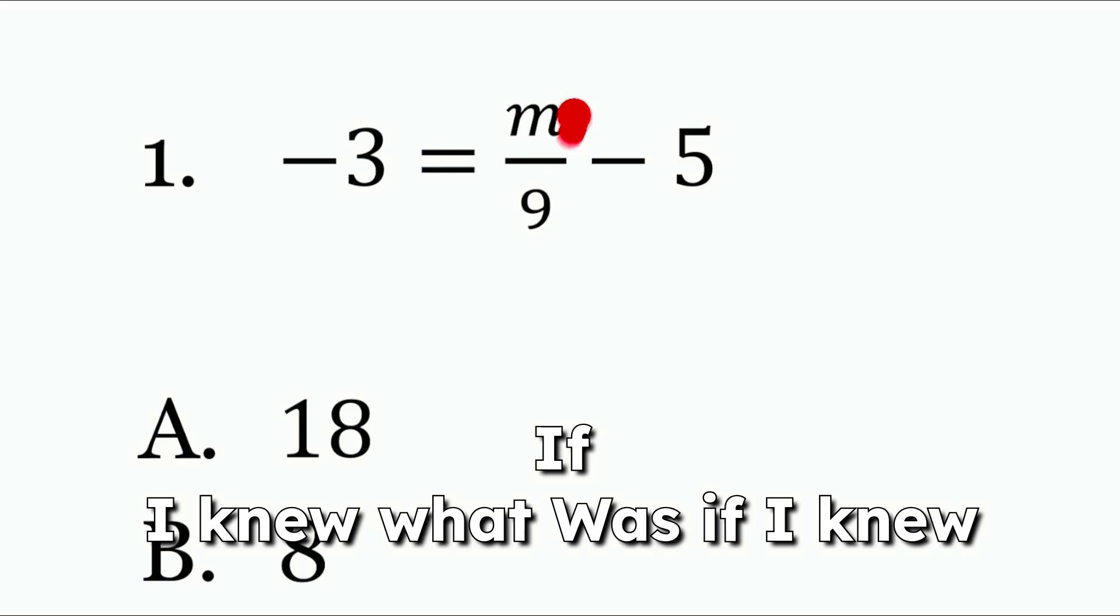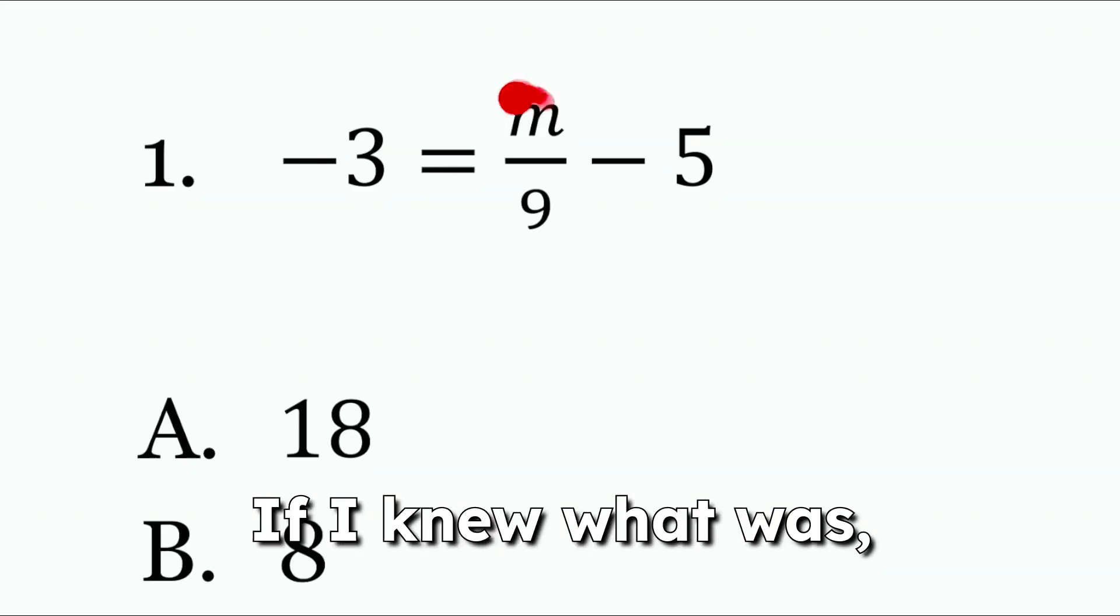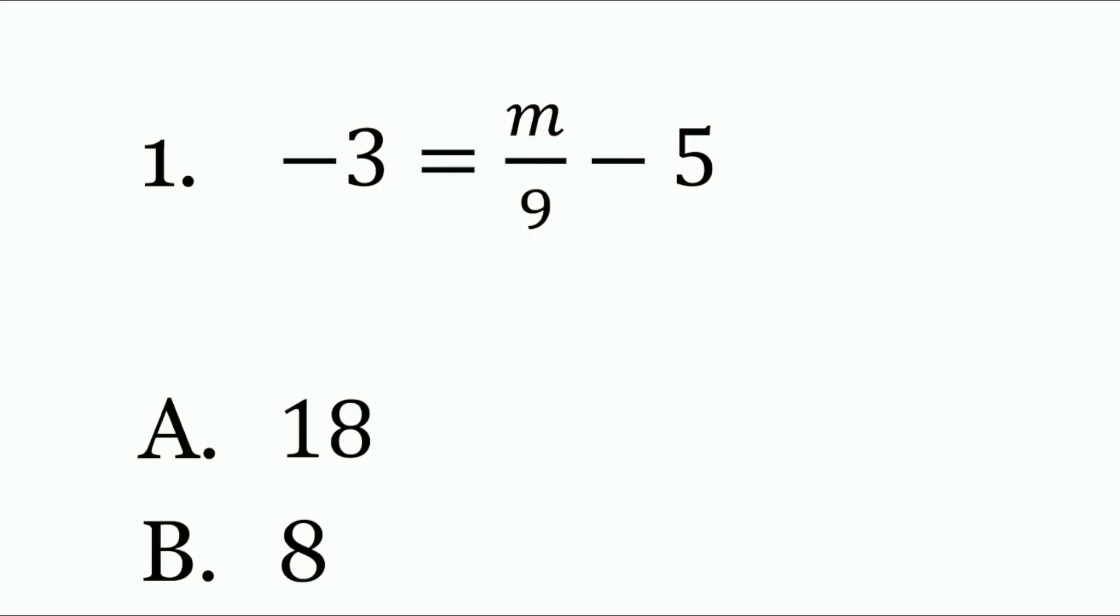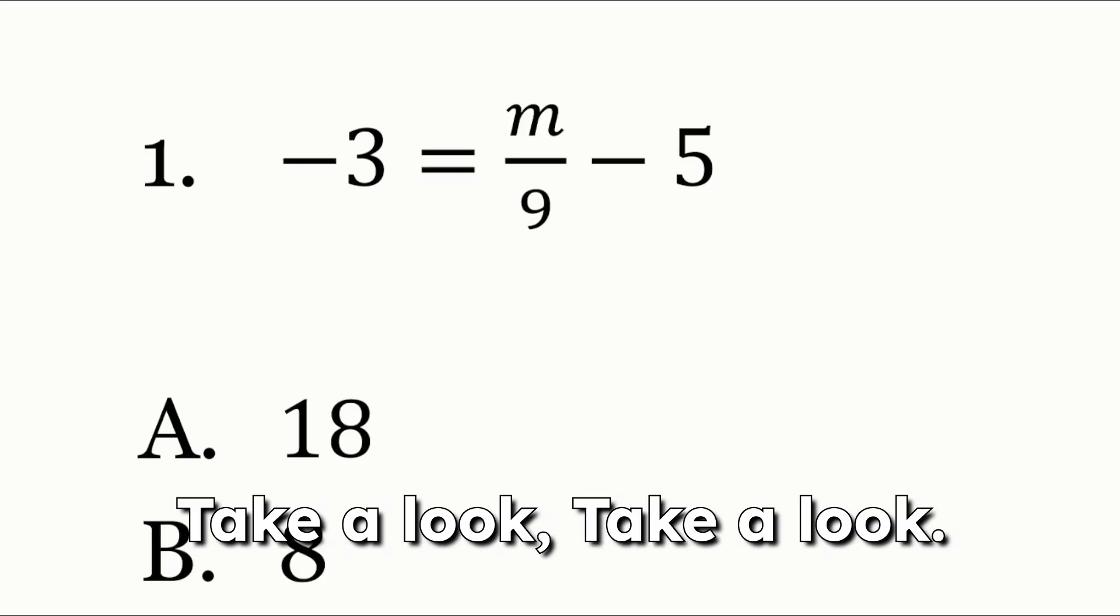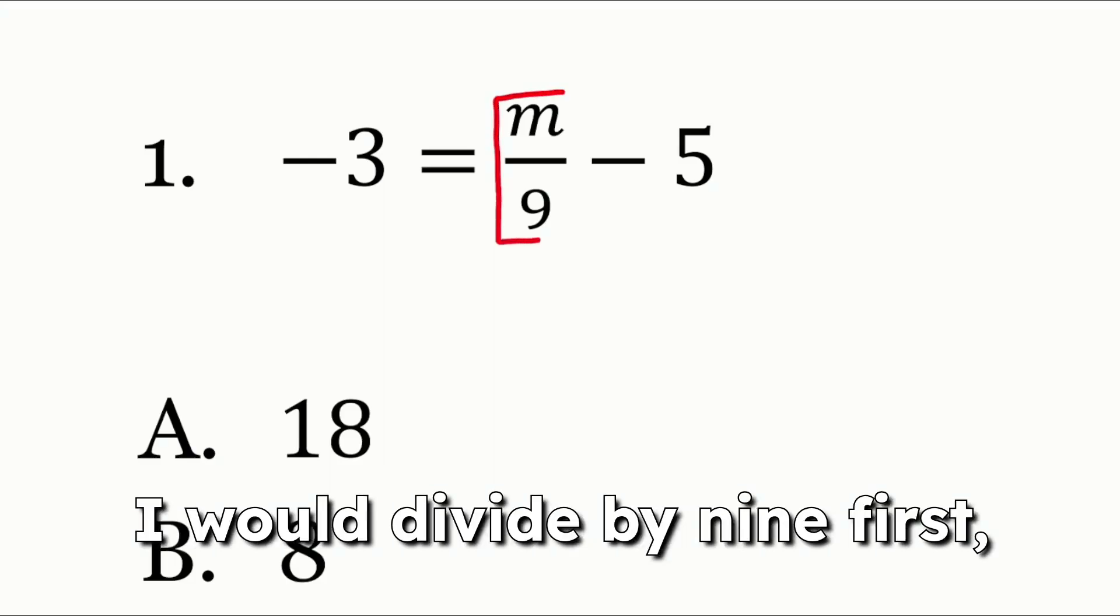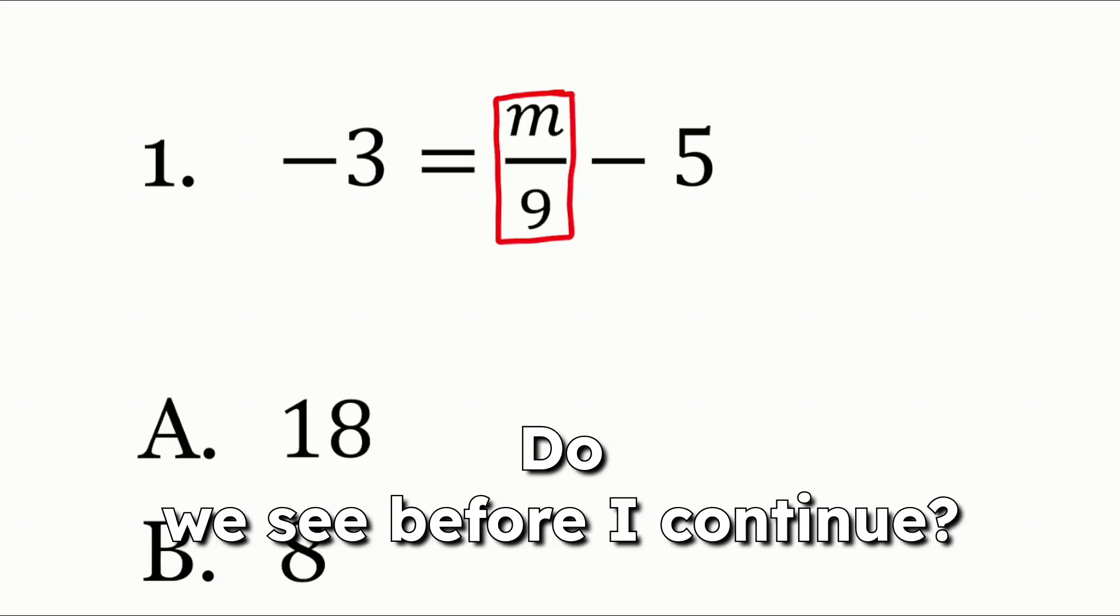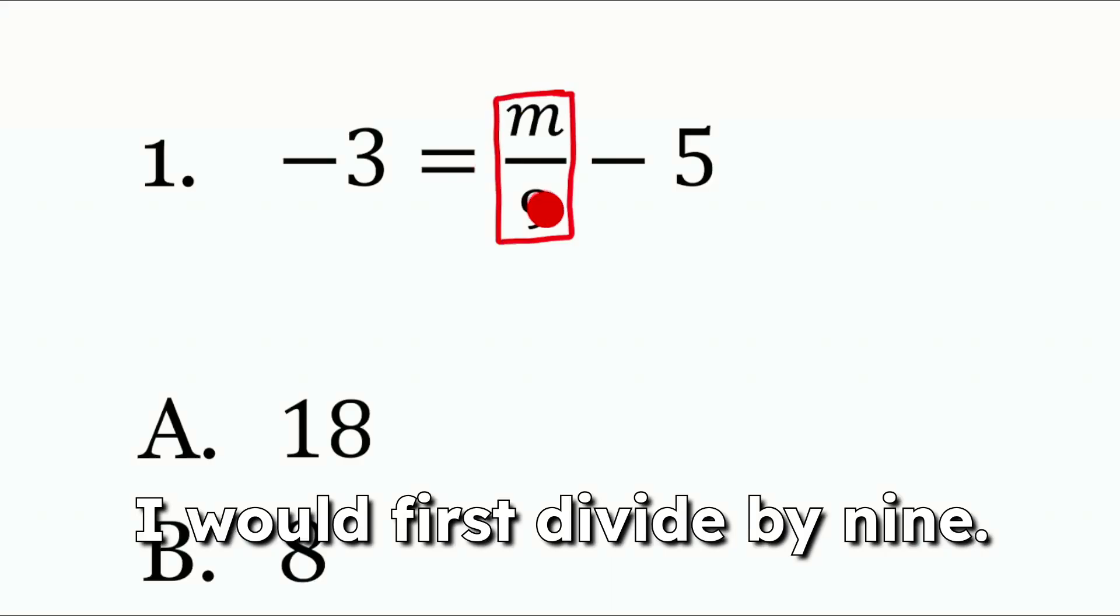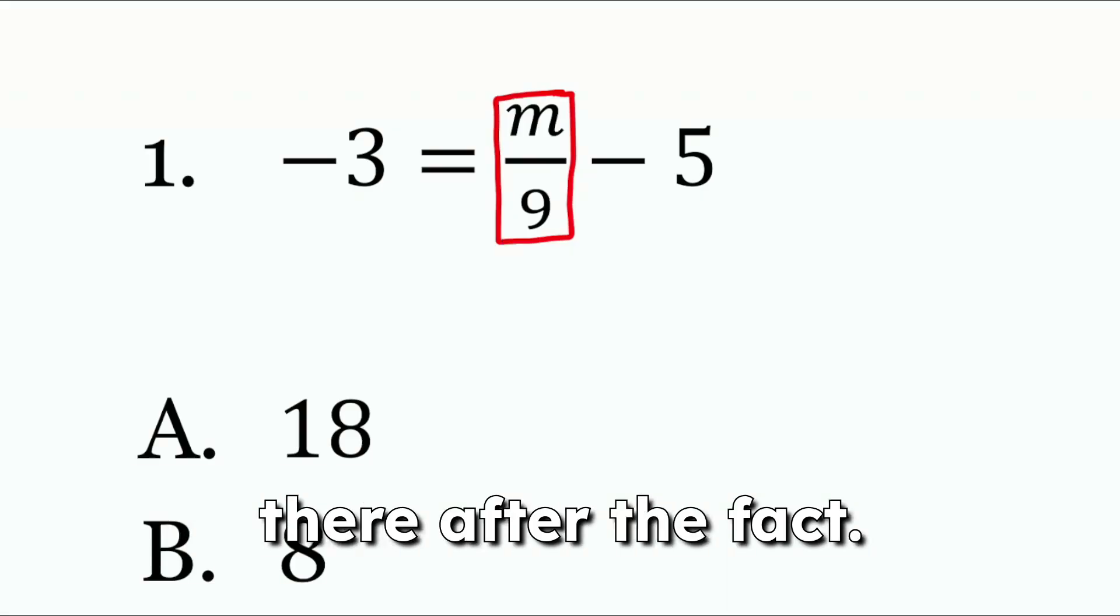So over here the forward steps. If I knew what M was, if I knew what the variable was, everybody, what would come first? If I knew what M was, would I subtract the 5 first? Would I divide by 9 first? Which one would it be? Yeah. Division. Division is what's coming first. Take a look. I would divide by 9 first. Then I would subtract by 5. Do we see, before I continue, do we see what the forward step is here? Again if I knew what M was, I would first divide by 9. Then you see that that minus 5 is separate. That minus 5 is attached there after the fact.